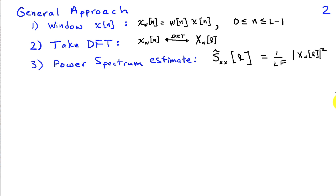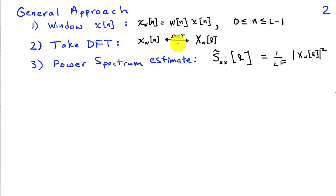Our general procedure goes something like this. We're going to allow for the possibility of using a window rather than simply the rectangular window. Other windows might be desirable, as we've seen when doing Fourier analysis for deterministic signals. So we'll have a windowed sequence x of n, which is w of n times x of n. We'll assume we have L values of the sequence, take a DFT of x of n, and use as our power spectrum estimate the magnitude squared of the DFT coefficients.